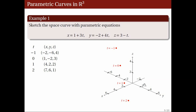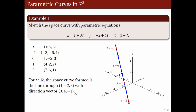Now, it appears that the points are collinear. In fact, the graph is the line passing through these points. Indeed, I hope you recognize the parametric equations of this form from the previous lecture on lines and planes in three-dimensional space. In particular, these given equations are the parametric equations of a line passing through the point with coordinates 1, negative 2, 3, and parallel to the vector with components 3, 4, negative 1.